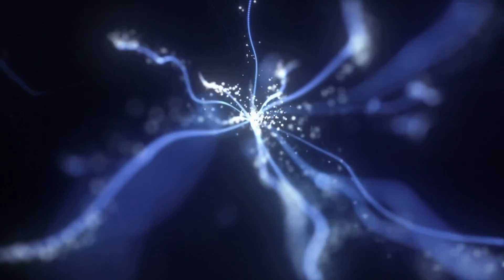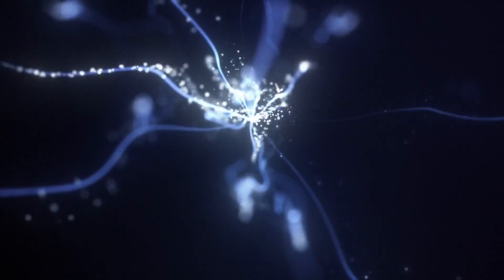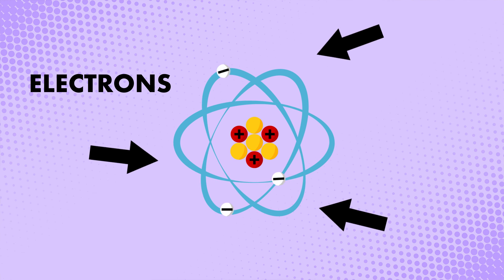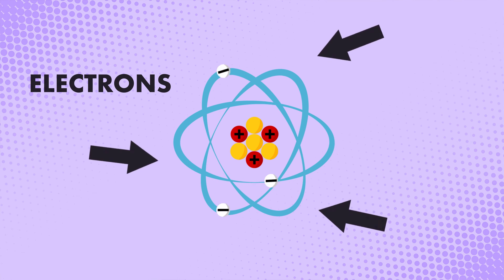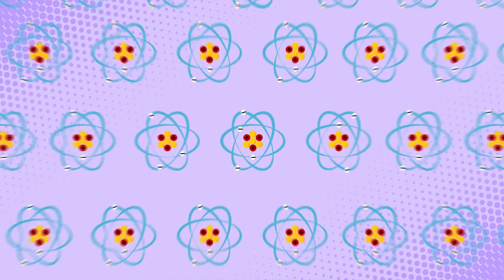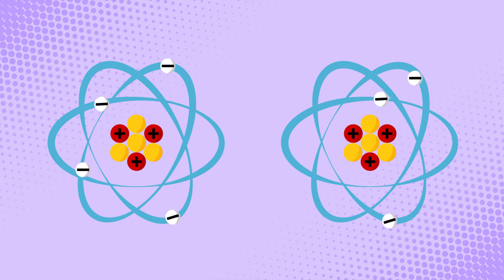Electricity is a form of energy resulting from the flow of electrons. Electrons are negatively charged particles found in atoms. You can think of atoms as the building blocks of matter — they are found in everything. Electricity happens when electrons get bumped from one atom to another.